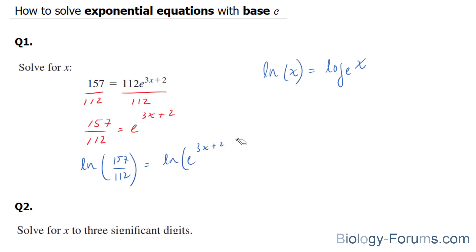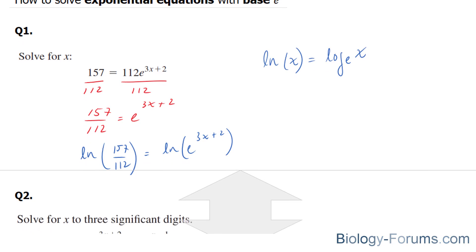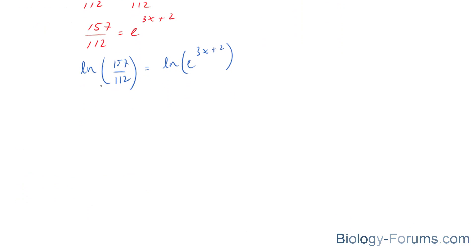What this does is it eliminates this e. So we end up with whatever this is equal to on the left, we'll just leave it the way it is for now. And on the right side, you end up with 3x plus 2.